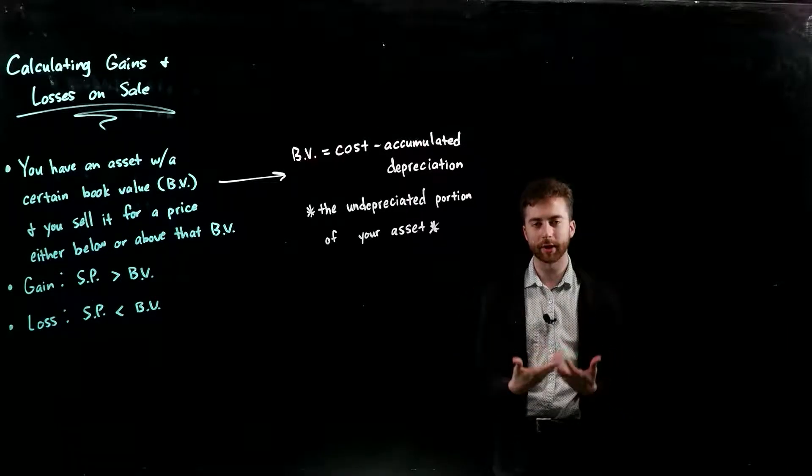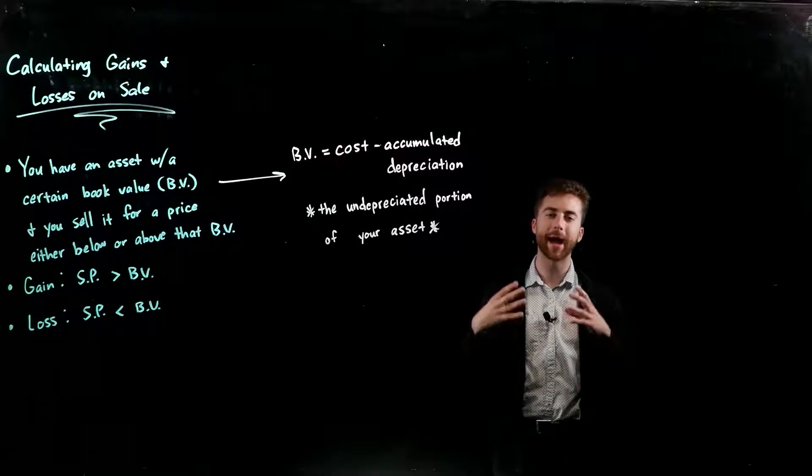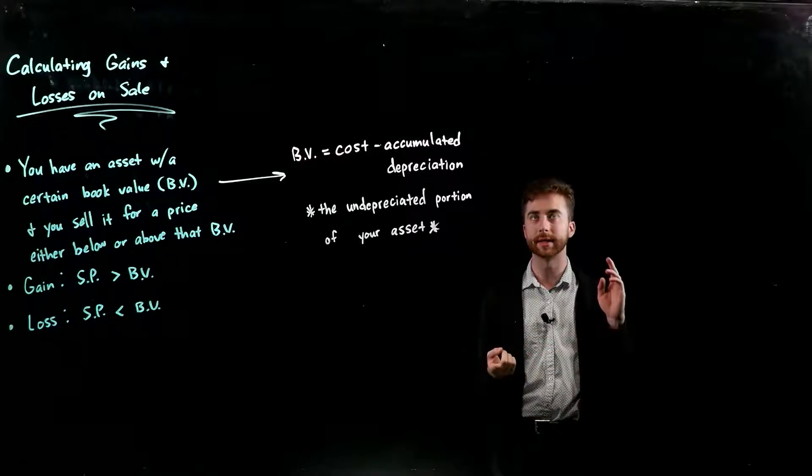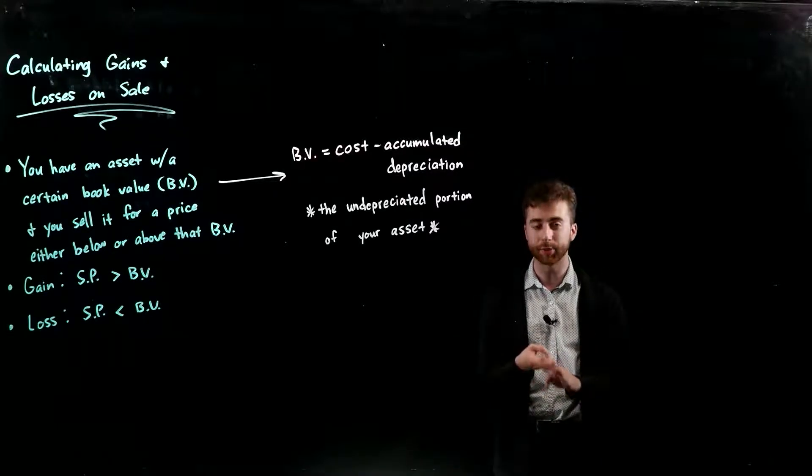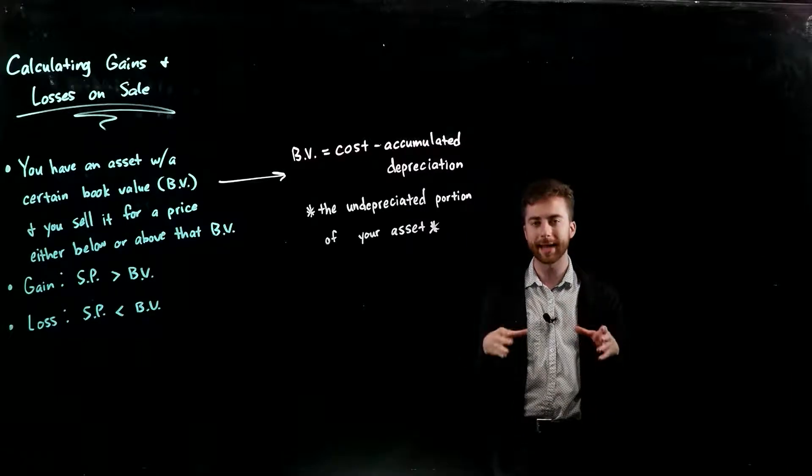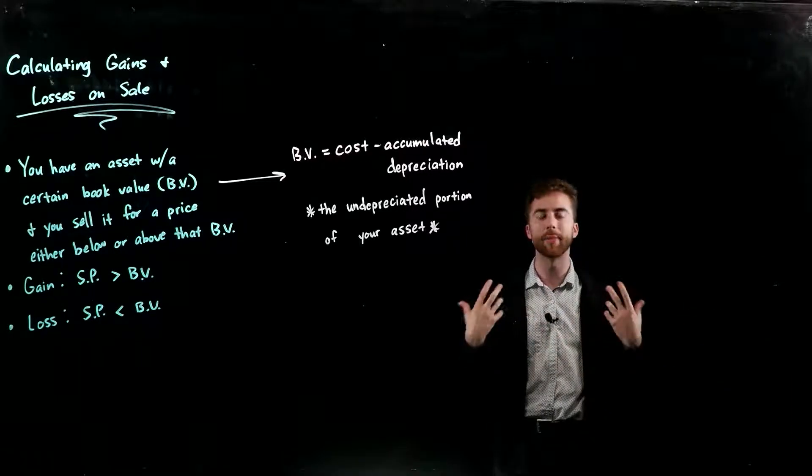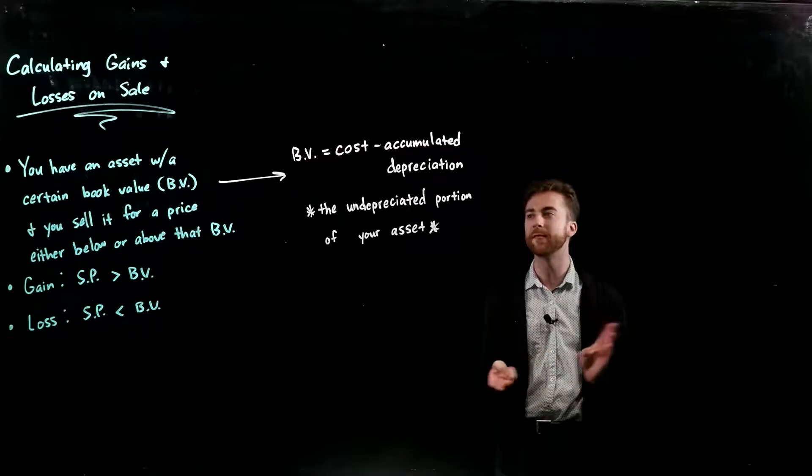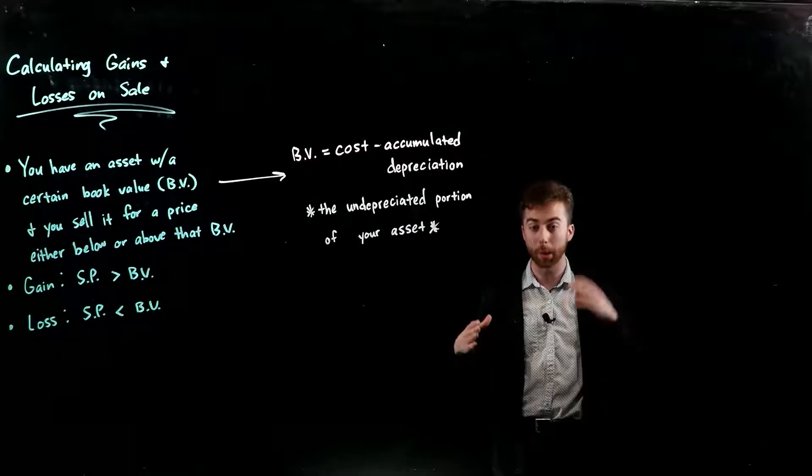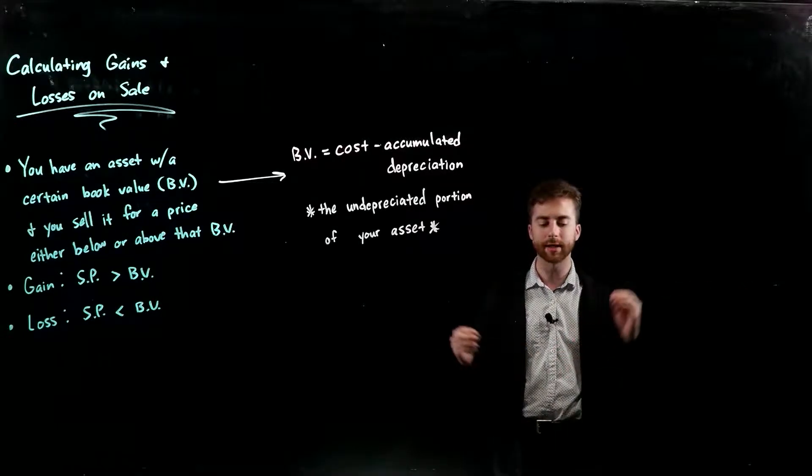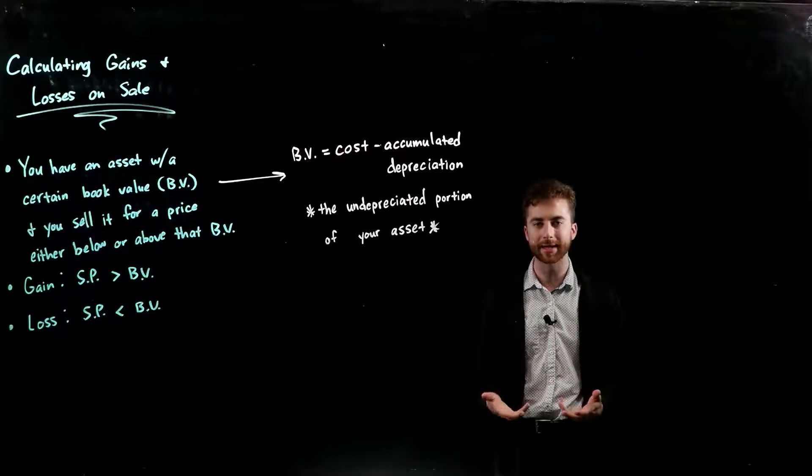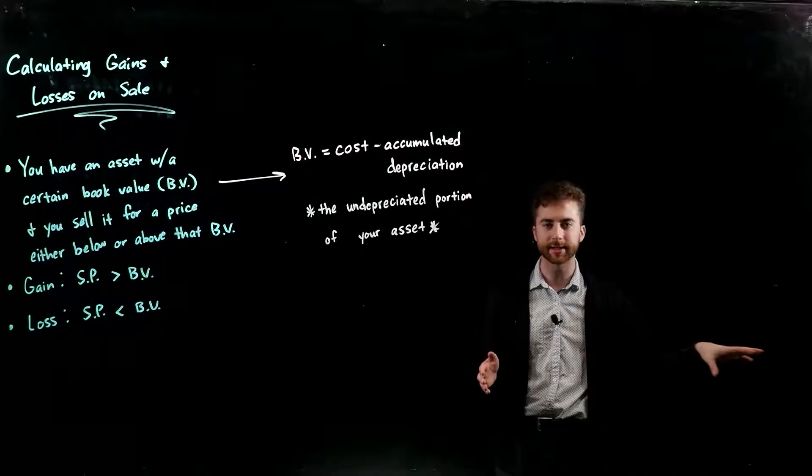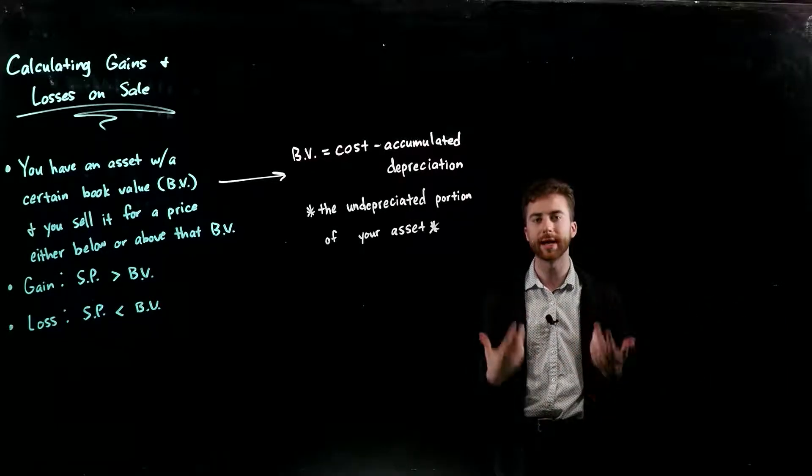The meat of what's going on is that we have some asset. Based on what you've learned about straight line, double declining, and sum of years digits depreciation, when you purchase an asset you depreciate it over time. By asset, it's usually a long-term asset - a piece of equipment, a building, or some vehicle, something that's going to have a long-term benefit to us. Instead of recognizing the entire expense for that asset immediately when we purchase it, we spread that burden and expense over a period of time through some depreciation method.